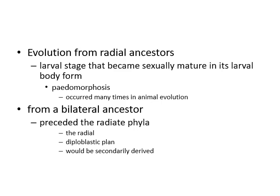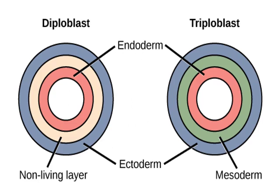The radial symmetry and diploblastic plan of life preceded the radiated phyla and would be secondarily derived. Diploblastic animals have two layers — ectoderm and endoderm — with a non-living material called mesoglia between them that may contain amoeboid cells. Triploblastic animals have three body layers: ectoderm related to skin, endoderm related to gut and digestion, and mesoderm related to muscles and skeletal support.